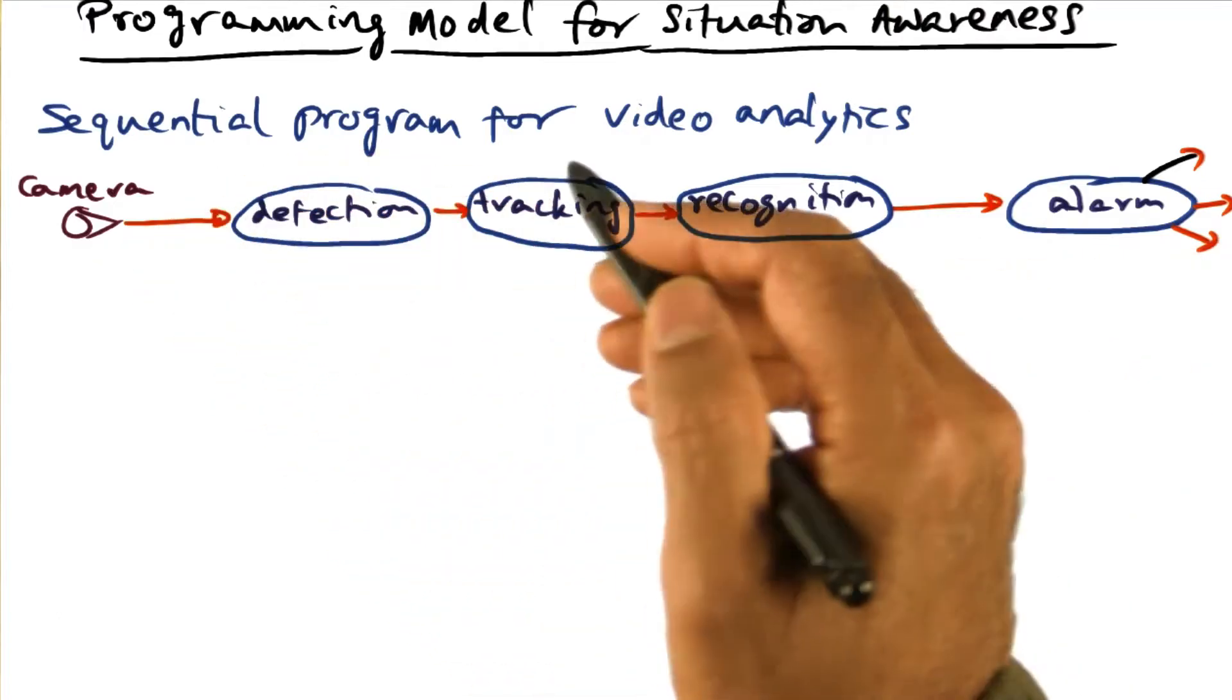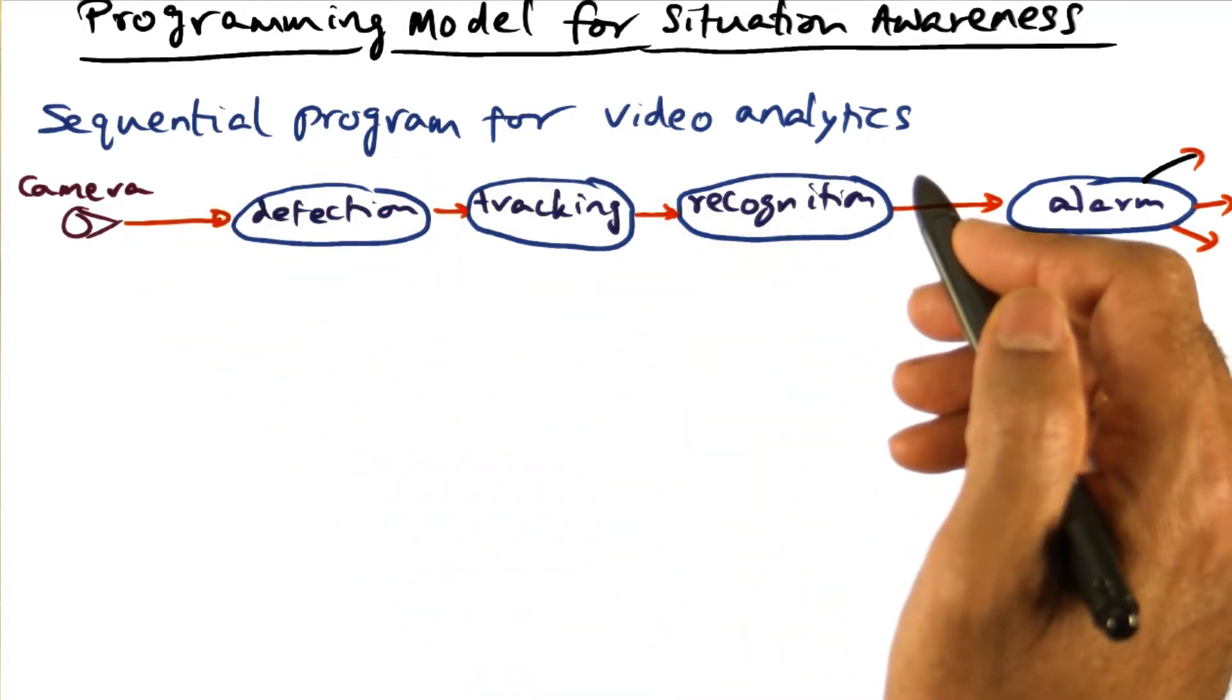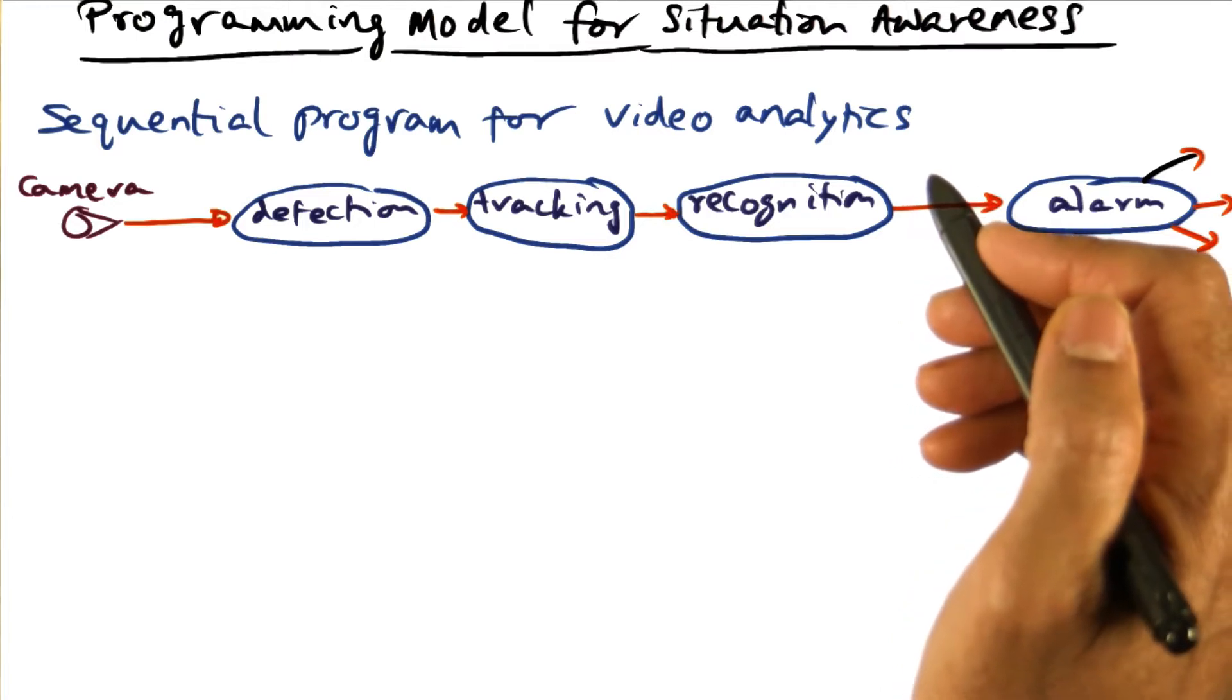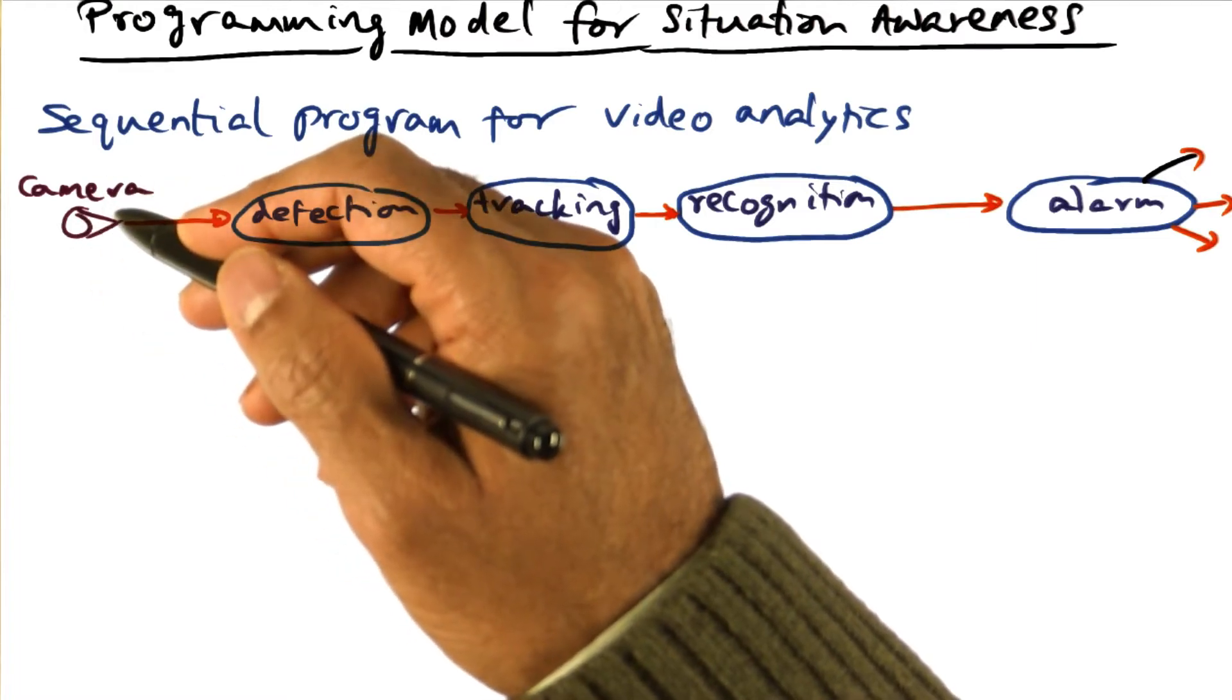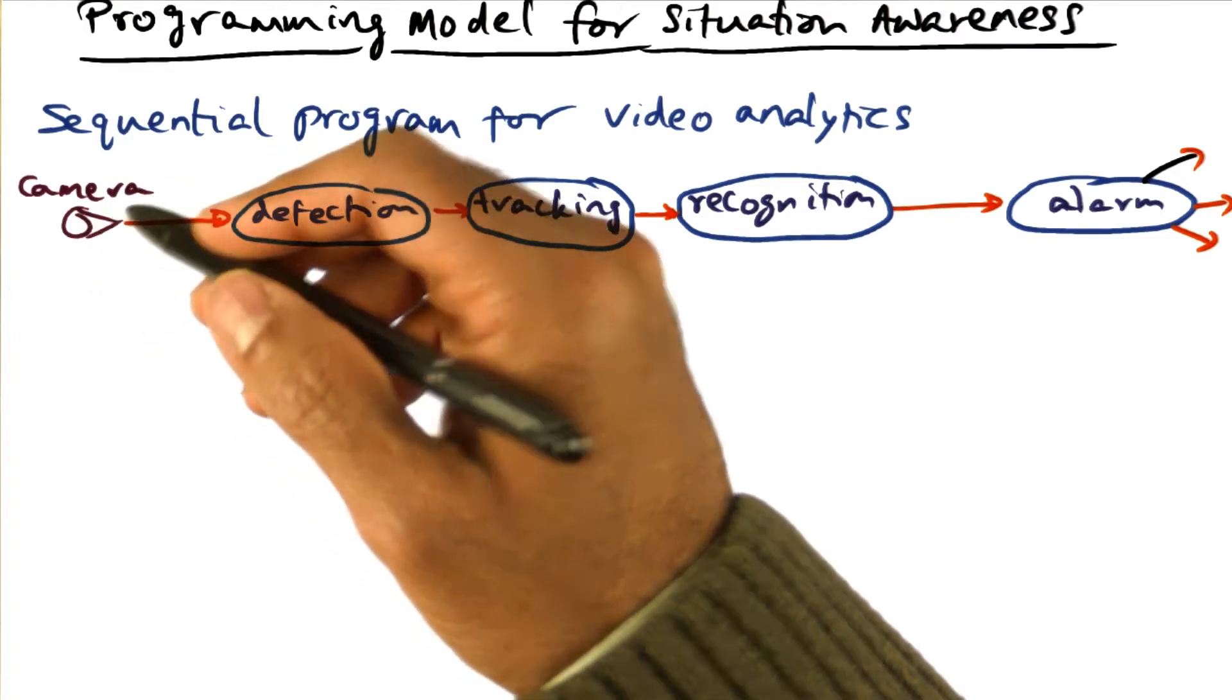Let's look at the computational pipeline for a video analytics application. Let's say I'm interested in detecting and tracking some anomalous event. So I have cameras which capture the images from a particular environment.